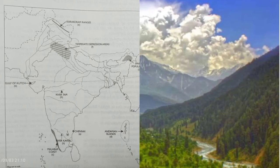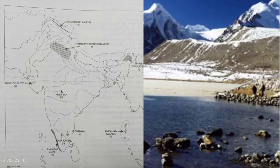Next map: 'A' — capital city of Tamil Nadu — that is Chennai. 'B' — Gulf of Kutch. 'C' — Malabar Coast. 'D' — Andaman Islands. 'E' — Karakoram Range. 'F' — area of temperate depression.